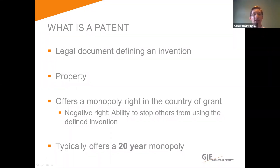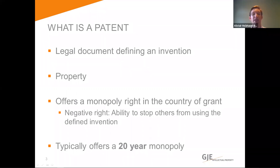A patent protects the innovation it defines by giving the owner a monopoly over that invention. What that means in reality is that the owner of the patent is able to stop others from using the invention defined in the patent. This makes a patent a negative right. Importantly, a patent is not a positive right — it does not give the owner the ability to use the invention. You are only able to use an invention defined in your patent if nobody else has a broader patent that your invention falls within the scope of.